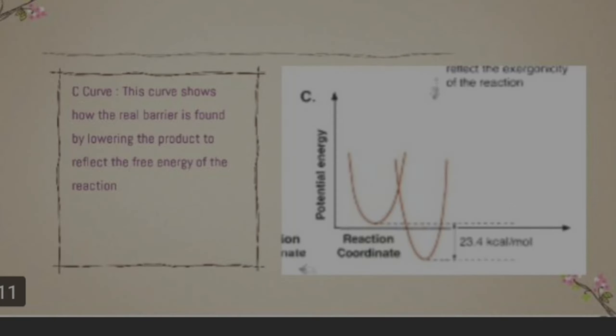In another case, curve C shows how the real barrier is found by lowering the product to reflect the free energy of the reaction. This graph shows how the intrinsic barrier is present, but the product energy is lowered — the value is negative, meaning energy is released. This represents an exergonic reaction, where the free energy value is negative.